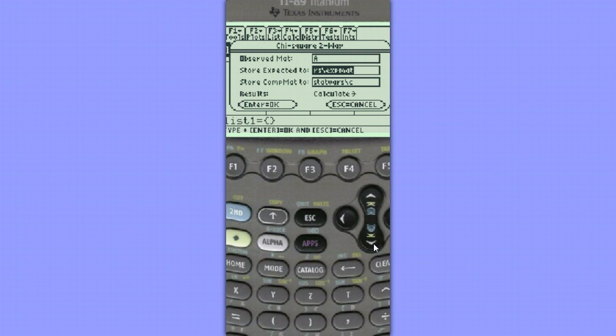I want to store my expected matrix, my expected values, assuming that there is no difference in the distributions. I'm going to store that in matrix B. So alpha, shift, B.